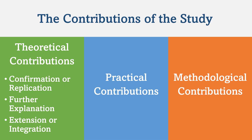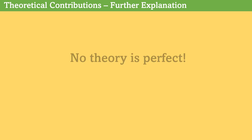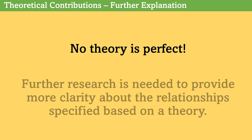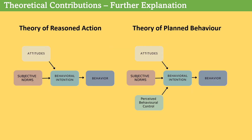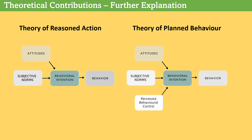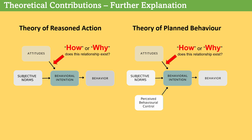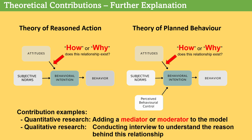The second group of theoretical contributions is further explanation. Indeed, no theory is perfect and further research is needed to provide more clarity about the relationships specified based on a theory. For example, the theory of reasoned action or theory of planned behavior explains the relationship between attitudes and intention. Thousands of studies have tested this relationship in different contexts. Now we may conduct a new study to understand how or why this relationship exists — in quantitative studies, by including a mediator or moderator variable, or through a qualitative study.